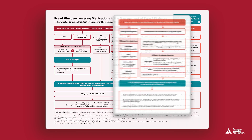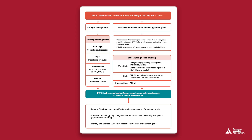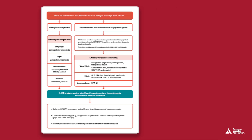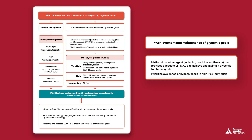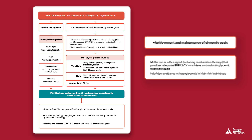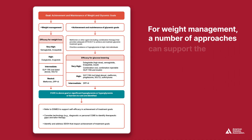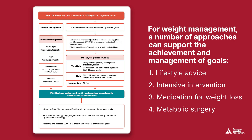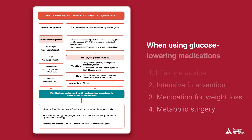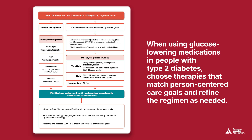Now we'll move to the side of the algorithm focused on reducing long-term risk complications through the achievement and management of glycemic and weight goals. For glycemic management, you want to choose approaches that provide the efficacy to achieve individualized glucose goals. A number of approaches are reasonable, such as metformin or agents including combination therapy that provide adequate efficacy for achieving and maintaining treatment goals. The algorithm provides a hierarchy of efficacy for glucose-lowering medications. When choosing a glucose-lowering plan, consider agents with high to very high dual glucose and weight efficacy. Anytime you're using glucose-lowering medications in people with type 2 diabetes, it's important to choose therapies that match person-centered care goals and then refine the care plan as needed through an iterative process.